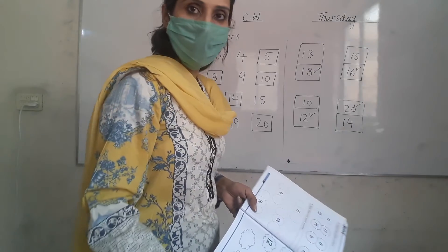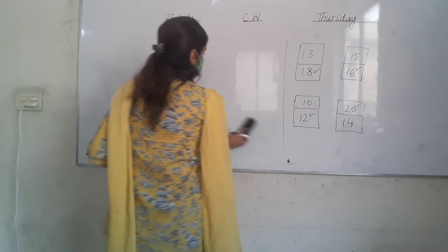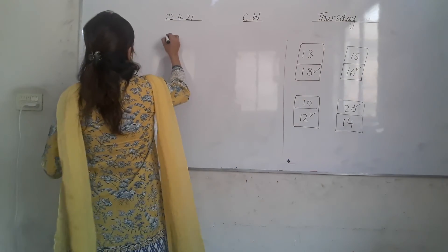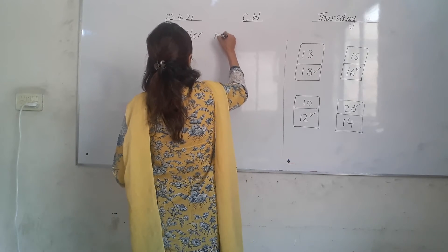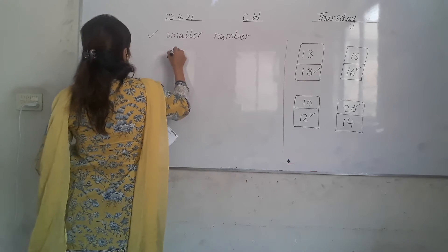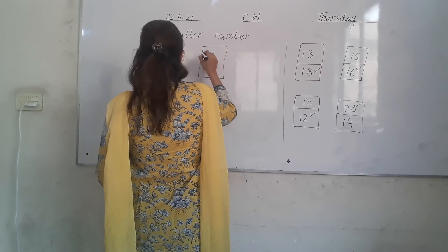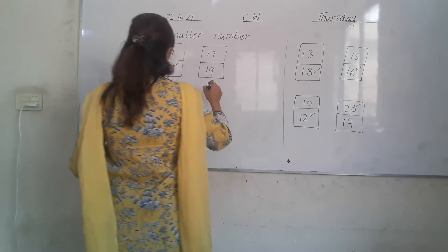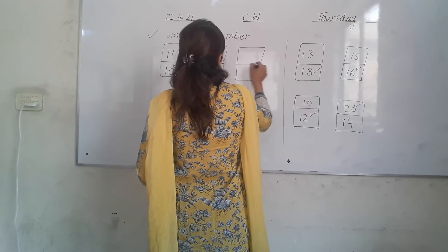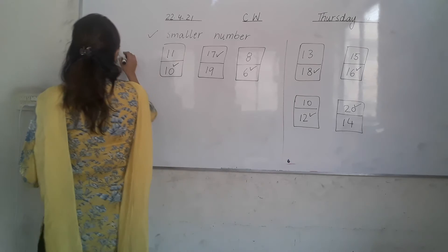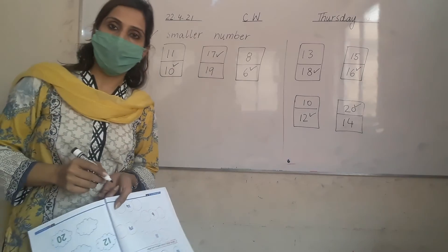They are saying tick a smaller number. Our teacher will pick a smaller number. You have to mention date and day on the page. Pick the smaller number — smaller means chota. 11 or 10? You have to pick the smaller number: 10. 17 or 19? 8 or 6? 6 is a smaller number. 12 or 20? You have to pick 12 because 12 is a smaller number.